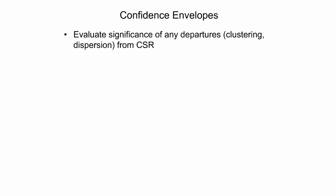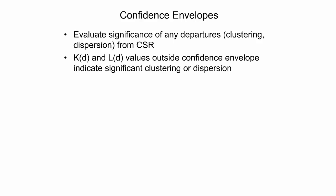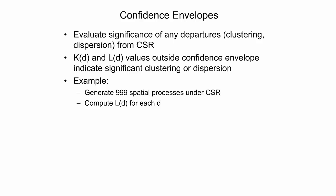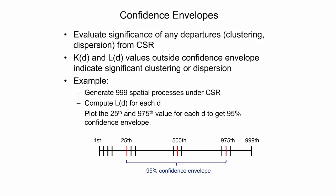The significance of any departures from complete spatial randomness, such as clustering or dispersion, can be evaluated using simulated confidence envelopes. For the L function, distances d where the observed L value lies outside the confidence envelope indicate statistically significant clustering or dispersion. The procedure is to generate a large number of spatial processes under complete spatial randomness, such as 999. For each process, the L value is computed for each distance and sorted from smallest to largest. The 25th and 975th values for each distance are read out to plot the 95% confidence envelope. Other confidence envelopes, such as the 99% confidence envelope, can be determined in a similar way.